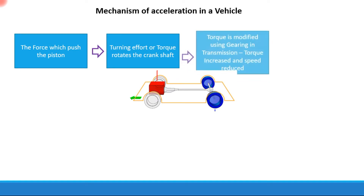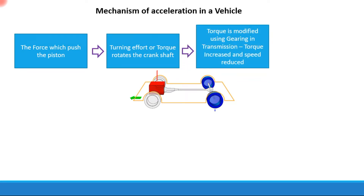That torque is then taken by the transmission. The torque is modified using the gearing in the transmission — gearing is basically the arrangement of gears that modifies the torque: it increases torque and reduces the speed of rotation. The concept applied in a typical transmission is the concept of gear ratio or mechanical advantage.